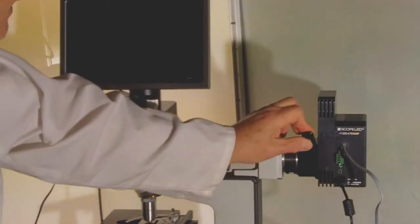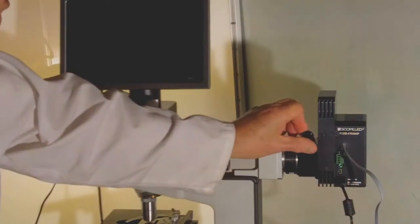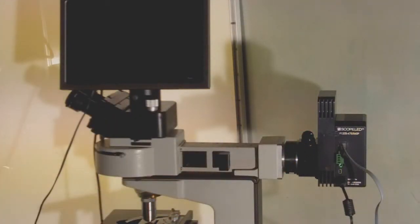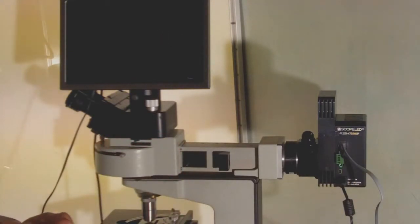We can adjust a collector lens to optimize the light for whatever objective lenses we're going to use on the microscope. For low power objective tissue fluorescence, you may want to disperse the light, homogenize it evenly across the field of view.